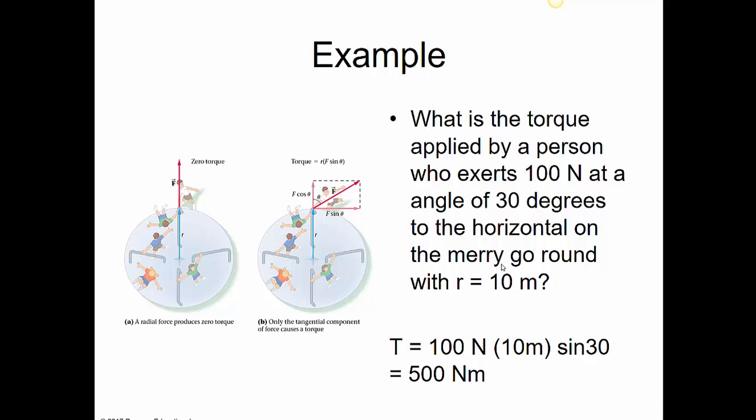So here's an example. Let's consider this person who's starting the rotation of the merry-go-round, and he's doing it with 100 newtons at an angle of 30 degrees. And he has a radius, and the radius is 10 meters. This is a really big merry-go-round. So the torque would be F times R, 100 times 10 times the sine of 30, or 500 newton meters.